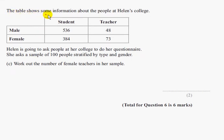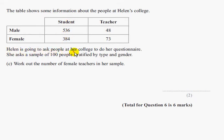The next part: the table shows some information about the people at Helen's College. You have male and female, and students and teachers. For example, 536 are male students, 73 are female teachers, 48 are male teachers, and 384 are female students. Helen is going to ask a sample of 100 people stratified by type and gender. Part C says: work out the number of female teachers in her sample.